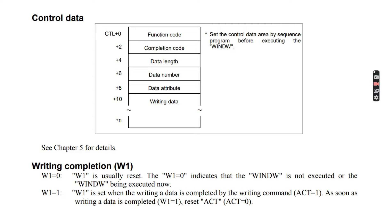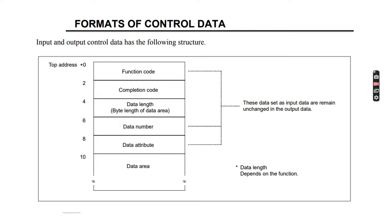We will see an example. This is the format for control data. First of all, in the top address we need to define the function code — whatever function I want to perform, whether I want to read a parameter, read a macro variable, read any tool length, or write any tool length. This is a standard list given by FANUC, it is in the manual, and we will see it in the next slide.